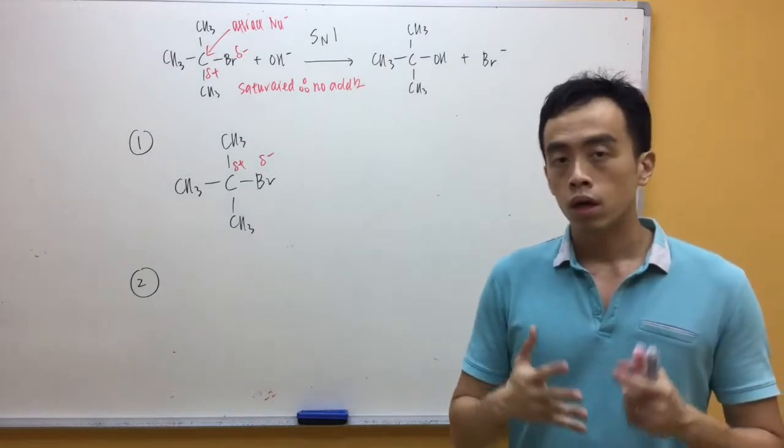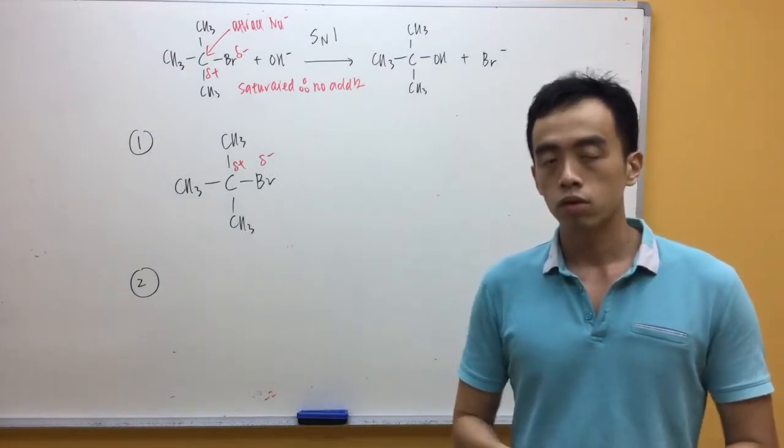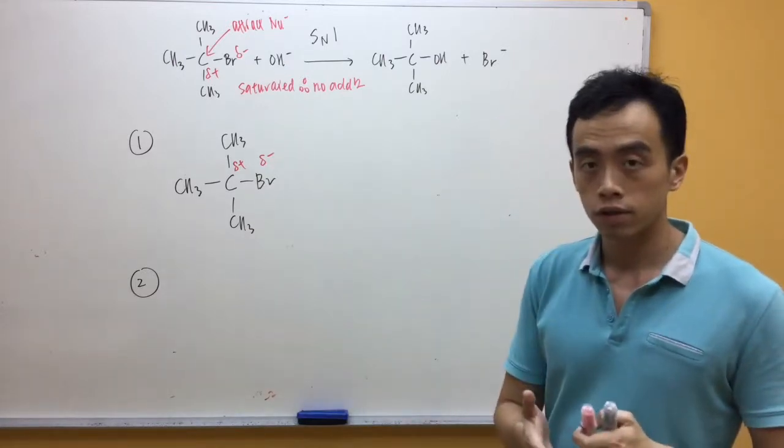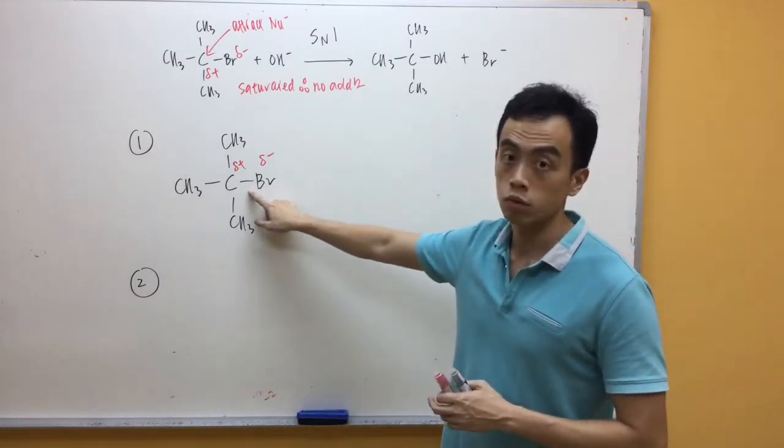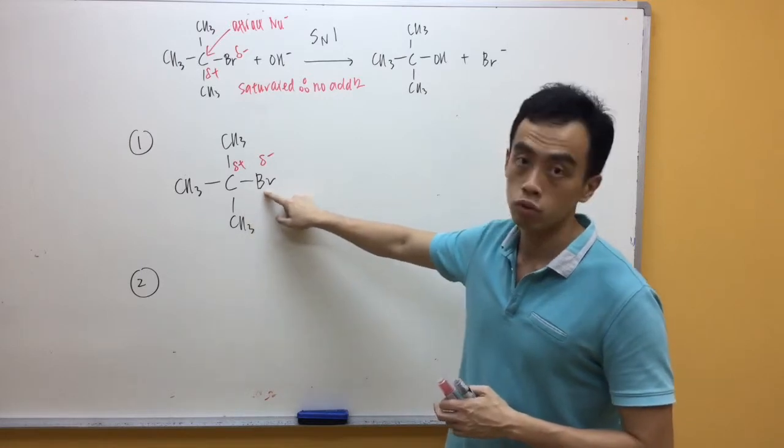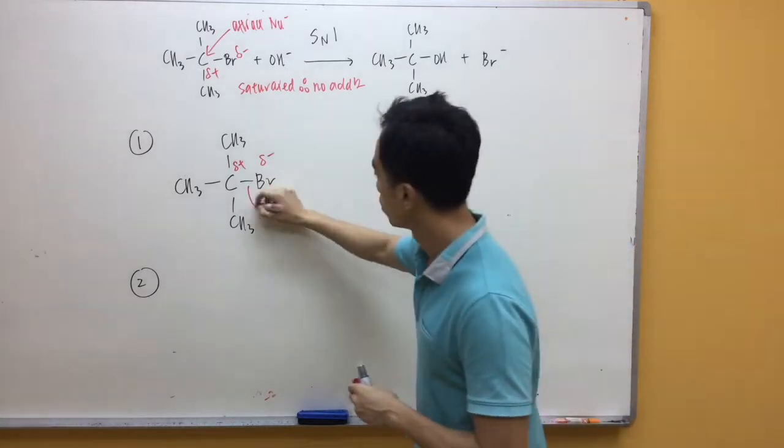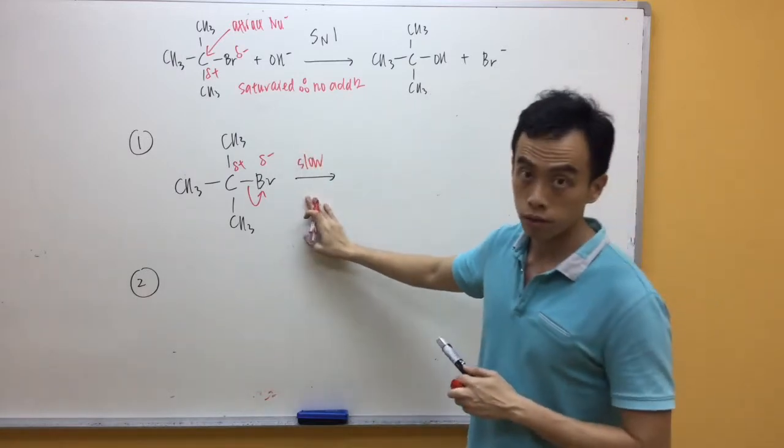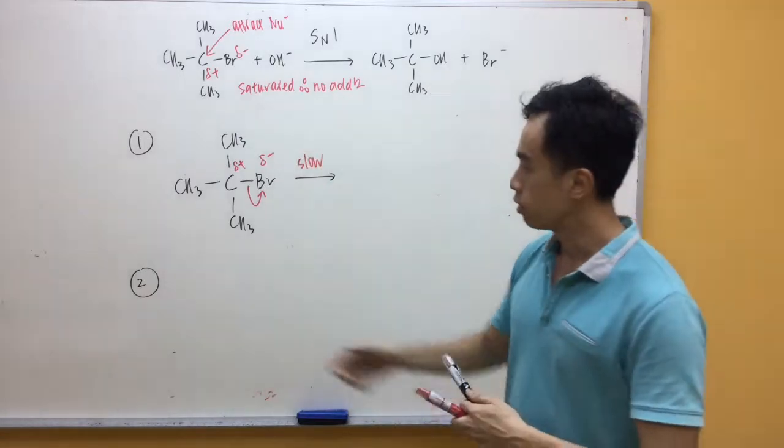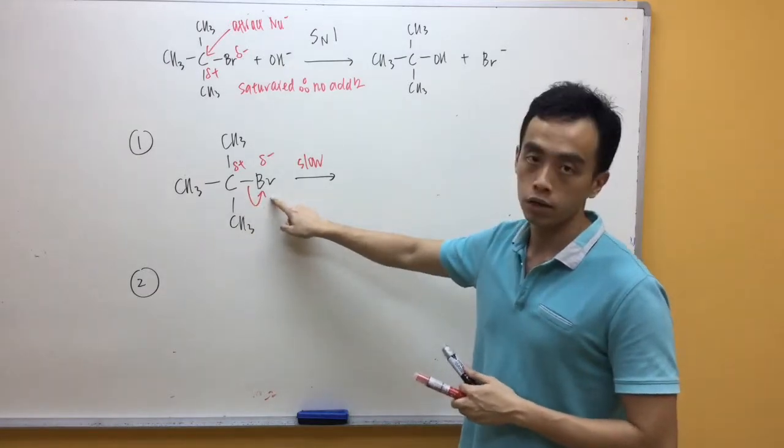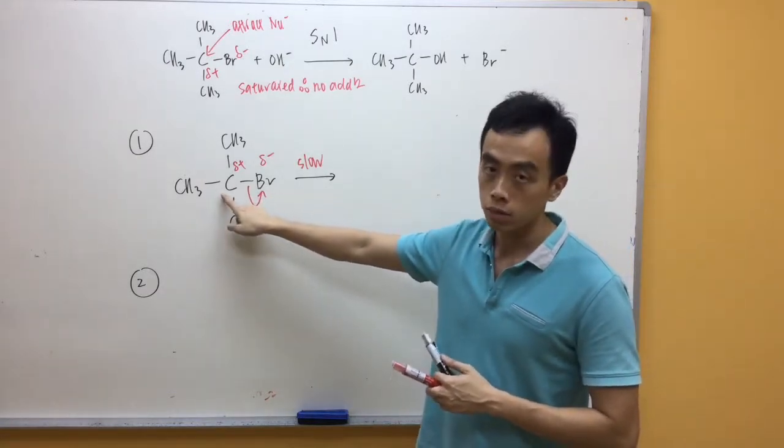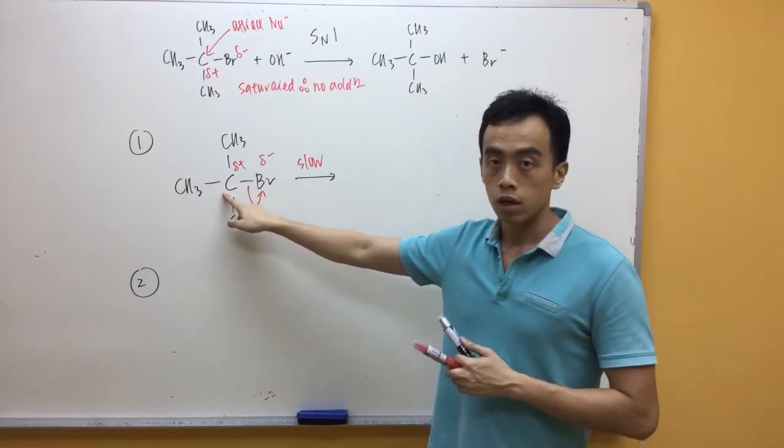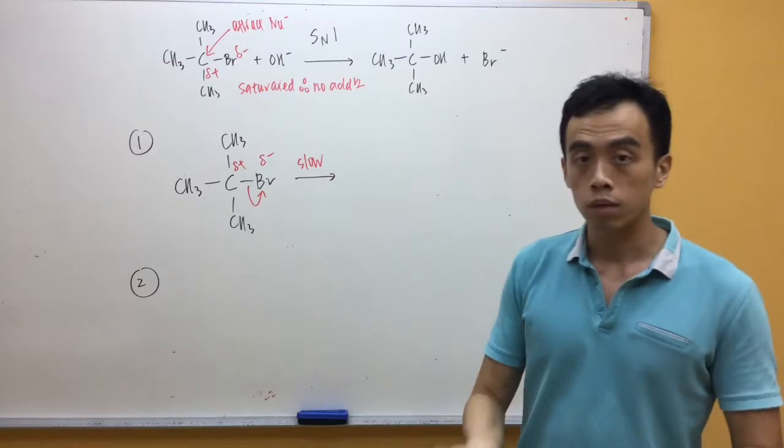Now, let's go through SN1 mechanism in detail. We start off with our halogenoalkane. What happens first is my C-Br bond will break and both electrons will go to Br. Now, this step will be the slow step. The product formed is both electrons go to Br, so we get a Br⁻. Then, what about this particular carbon? This particular carbon will now be short of one electron, so it becomes positively charged. It forms my carbocation.